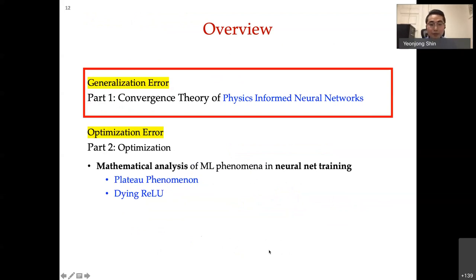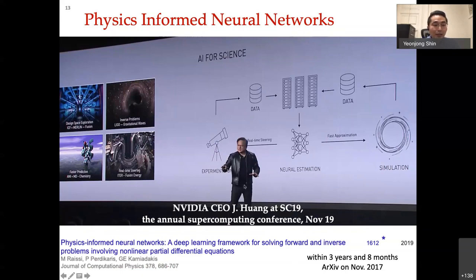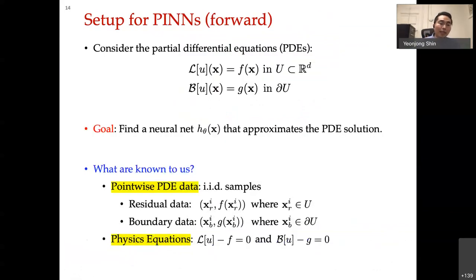Let me talk about the convergence theory of physics-informed neural networks. PINN is a deep learning framework for solving PDEs. It first appeared on arXiv in November 2017, and within about three years and eight months it was already cited more than 1,600 times. PINN has appeared in media multiple times — notably NVIDIA CEO Jensen Huang addressed AI for science at a supercomputing seminar in 2019 and mentioned PINN. The principle is to embed physics equations into the neural network.